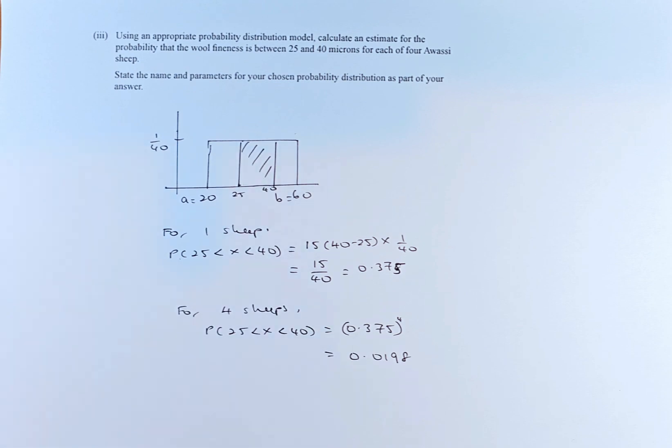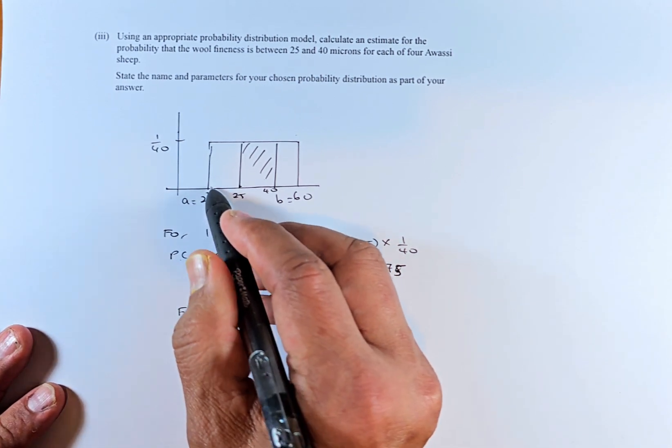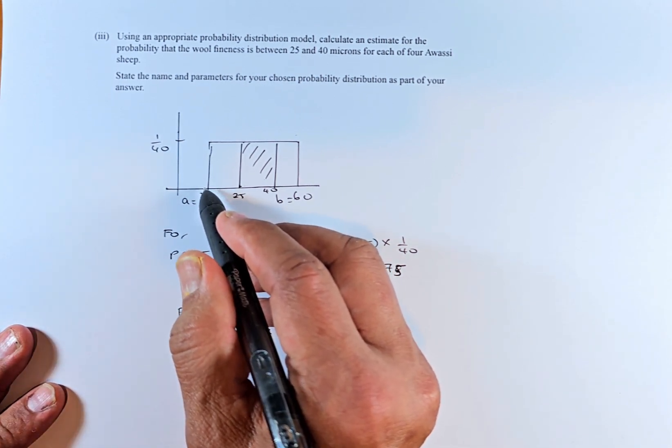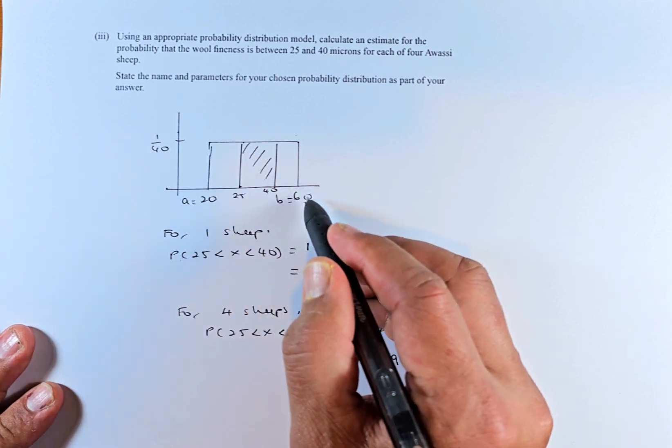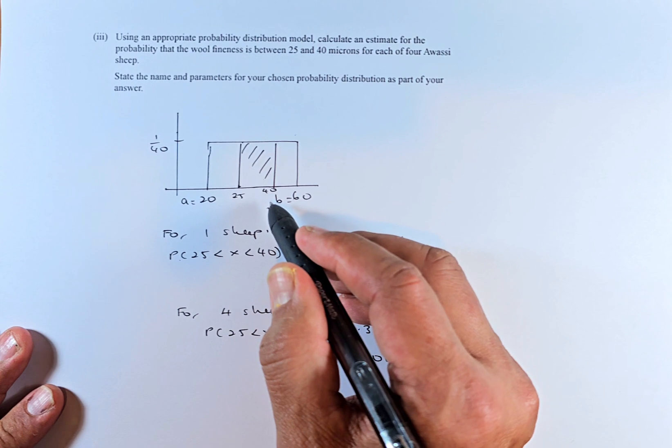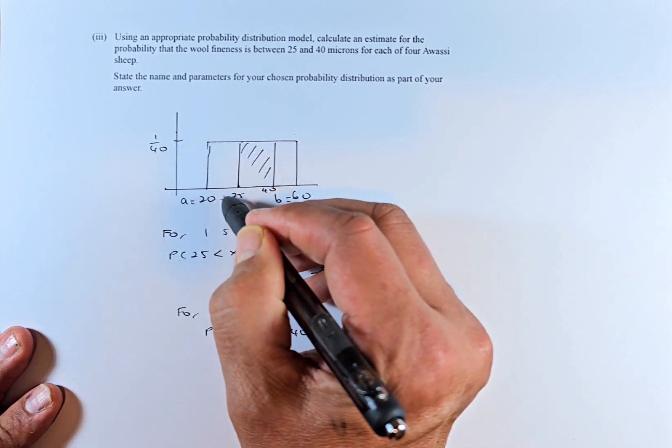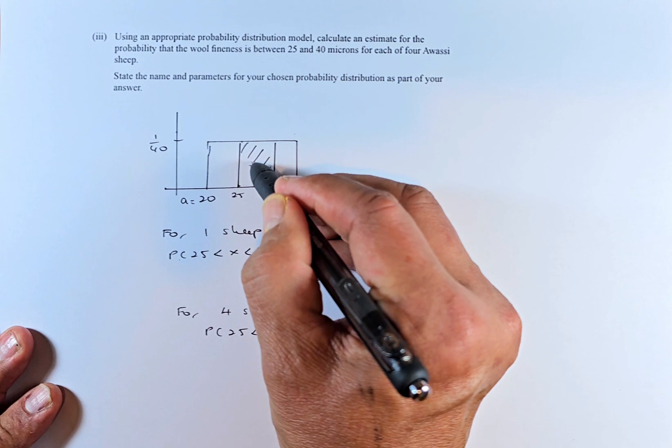We are going to use the same distribution. We start at A equals 20. The starting point is 20. If you look at question 1A part 1, B is going to be 60. We are going to calculate between 25 and 40. So 25 and 40 is in between 20 and 60. That is the area we are looking for.